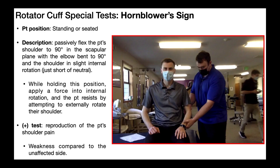Let's now look at hornblower's test, also called hornblower's sign. This is a special test used to assess for either a tear in the infraspinatus muscle or fatty degeneration of the teres minor muscle. The psychometrics of this test are pretty amazing — the sensitivity is all the way up at 100% and the specificity isn't that far behind at 93%. So this test is good for both ruling out a tear of the teres minor muscle and ruling it in. If somebody tests positive for hornblower's sign, they have a 93% chance of having a teres minor tear or some kind of fatty degeneration of the tendon. If they test negative, you can say with 100% certainty that they do not have a pathology of the teres minor muscle.